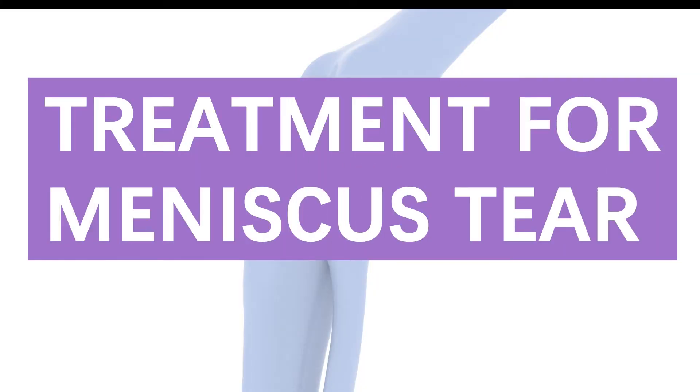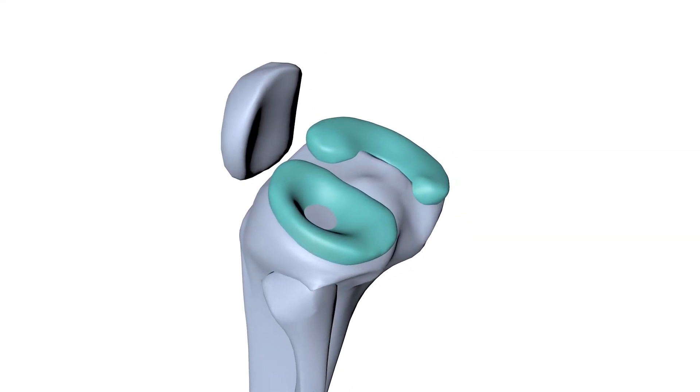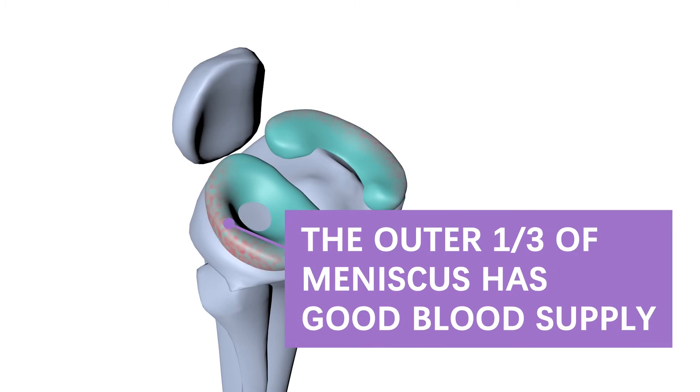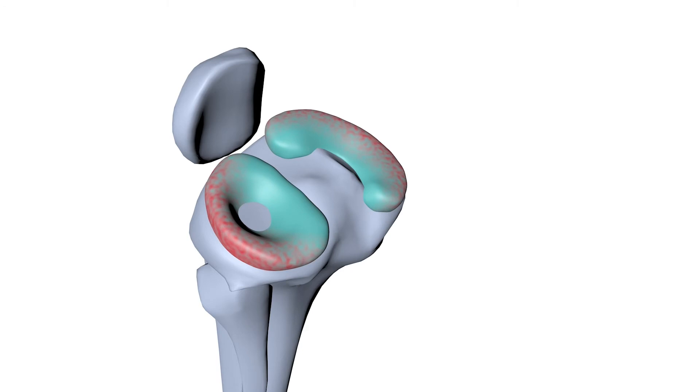Treatment for a meniscus tear depends on the size and location of the tear. The outer one-third of the meniscus has a good blood supply. If the tear occurs here, it may heal on its own.